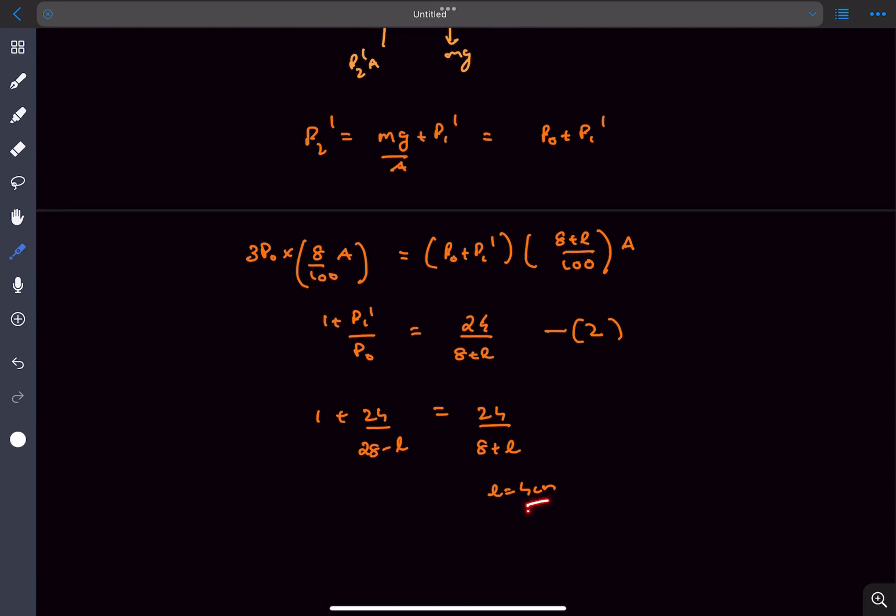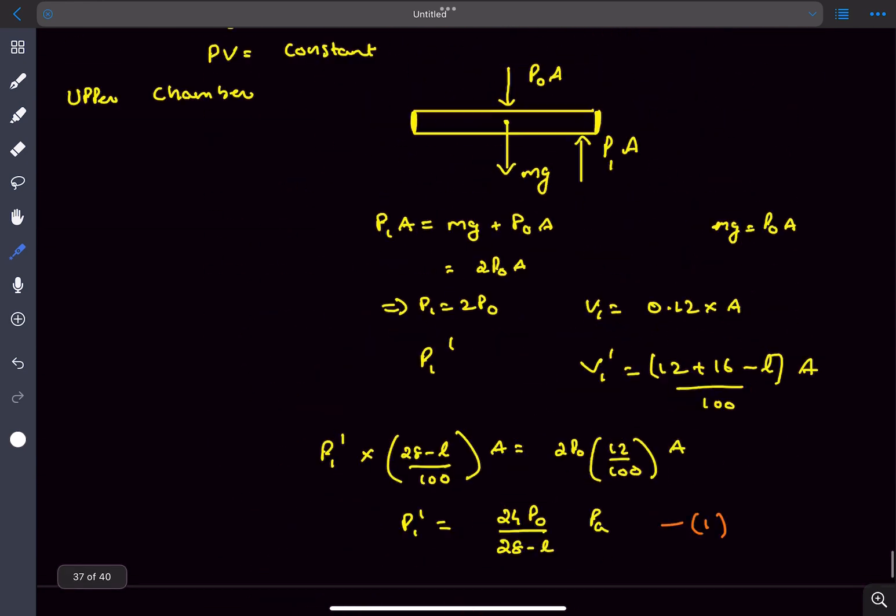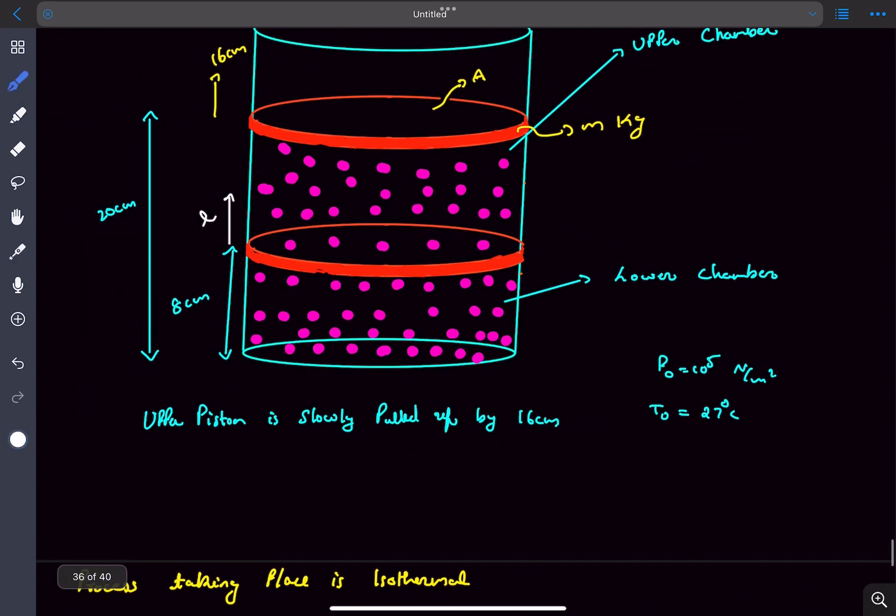As we have two equations and two variables, we can solve them to get the value of L to be 4 centimeters. You can either substitute the options into this relation or solve the quadratic equation. We determined the length L by which this moves upward to be 4 centimeters.